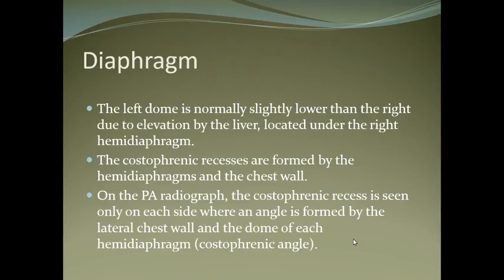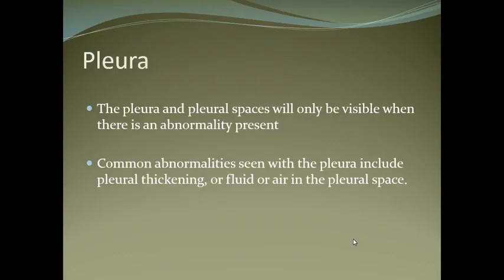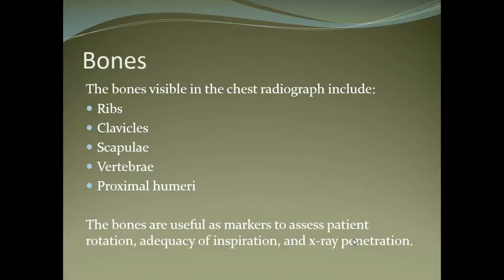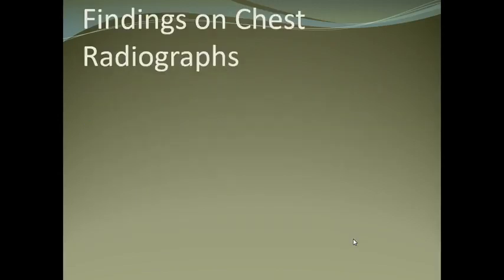Usually, the left dome of the diaphragm is slightly lower than the right due to elevation by the liver. The costophrenic recesses are formed by the hemidiaphragm and the chest wall. On the PA radiograph, the costophrenic recess is seen on each side as an angle formed by the lateral chest wall and the dome of each hemidiaphragm. The pleural spaces are only visible when abnormality is present. Common pleural abnormalities include thickening, fluid, and air in the pleural space. In the bones, we assess the ribs, clavicle, scapula, vertebrae, and proximal humerus.